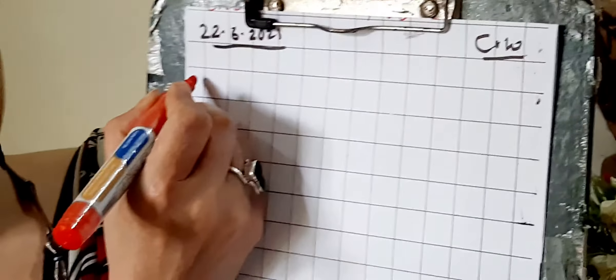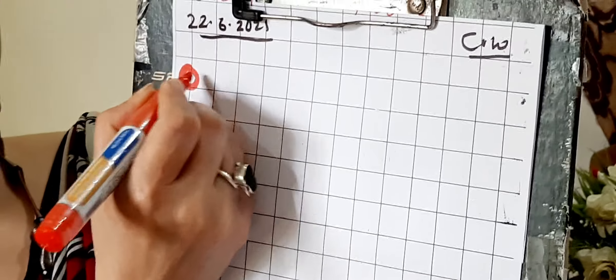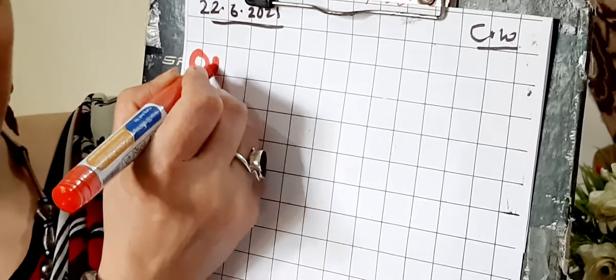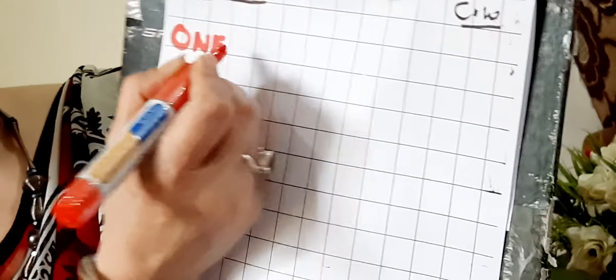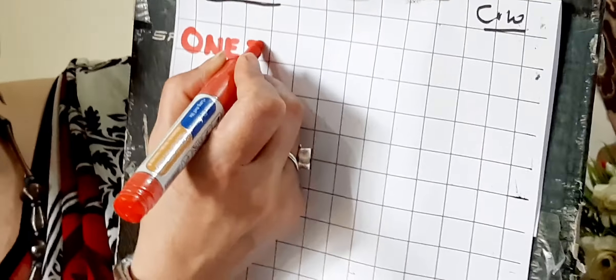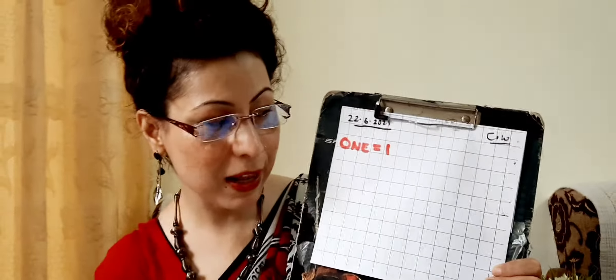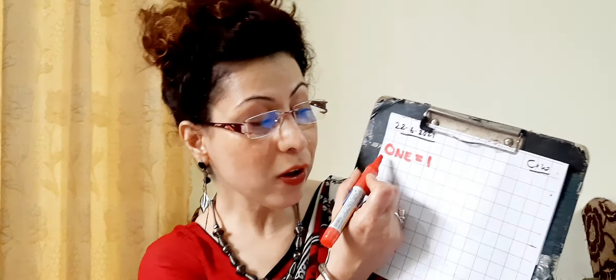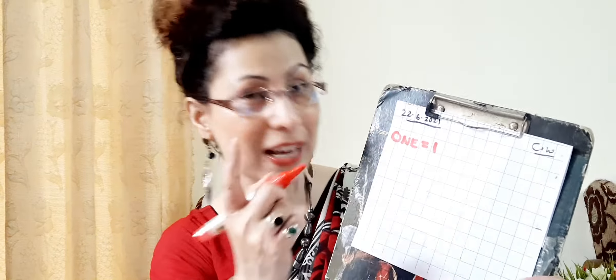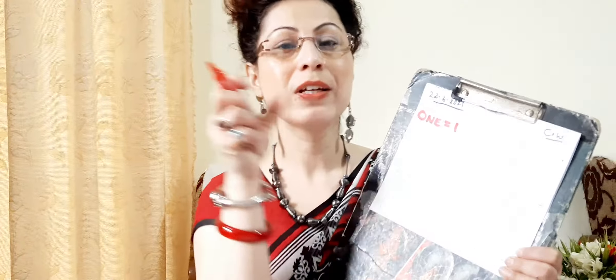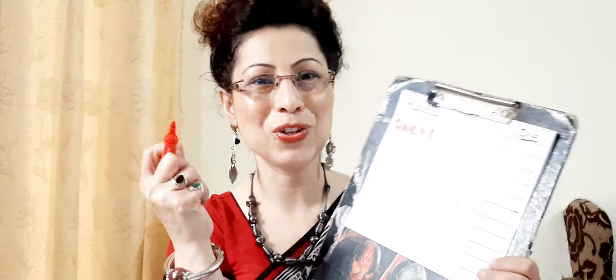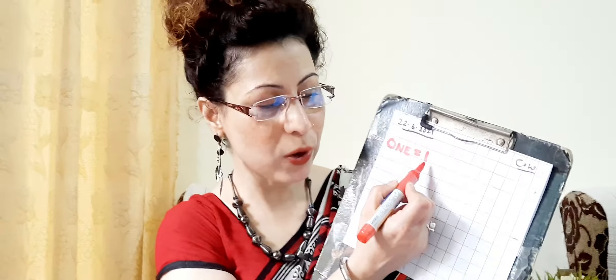O, N, E — the two dashes are called 'is equal to' — O-N-E is equal to 1. While writing this spelling, please be careful. All the letters in the word ONE should be closely written together. O, N, E, 1 is equal to 1.